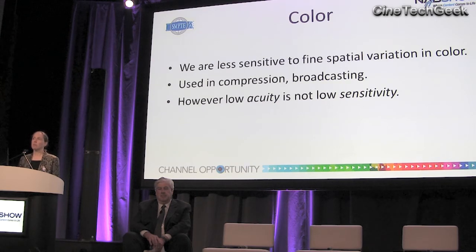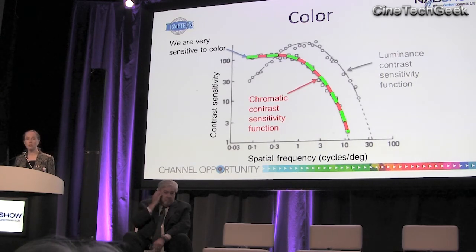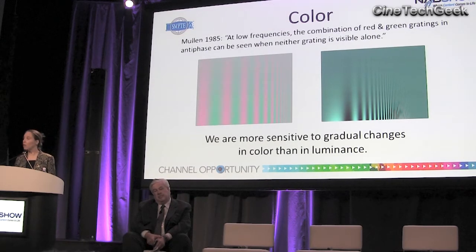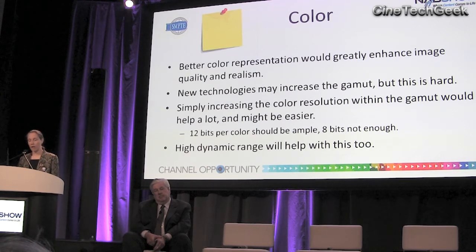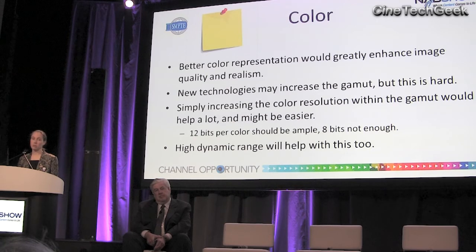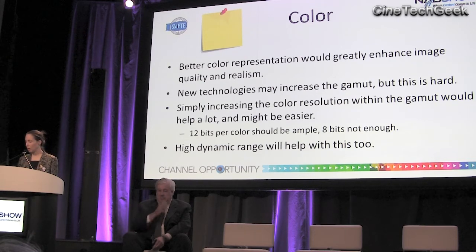The low acuity we have for colour perception isn't the same as low sensitivity — we're actually very sensitive to colour. At low frequencies we're more sensitive to colour variation than to luminance, so you can see gratings defined by colour when you couldn't see them defined purely by luminance. That means increasing pixel depth will very much improve our perception of colour. Twelve bits per colour should be ample to represent the fine levels we can discriminate, but 8 bits — as found on a typical PC — certainly isn't enough. High dynamic range is going to help there as well.